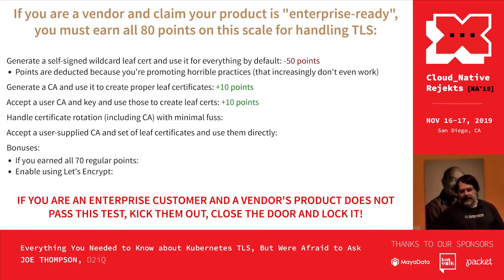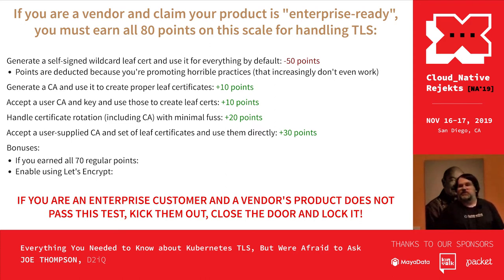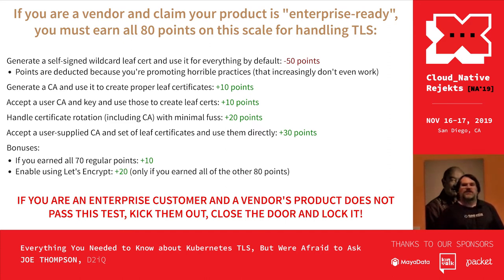Accept a user CA and key and use that to create leaf certificates — you get more points. If you can handle certificate rotation without it being a huge pain, you get serious points. And the reason I give the most points: if you can accept a user-supplied CA and a set of leaf certificates and just use them as-is without generating anything of your own, you get all the points. Enable Let's Encrypt in your product and you get 20 bonus points.